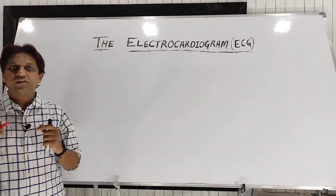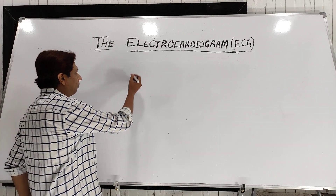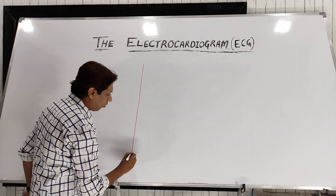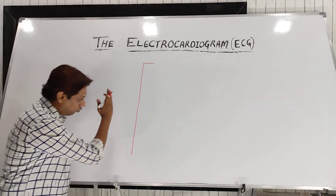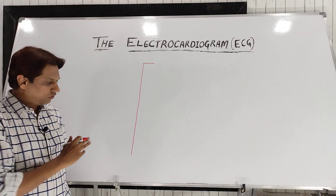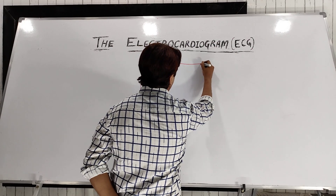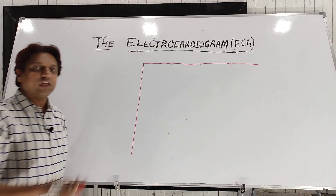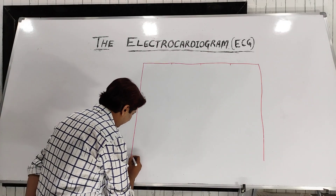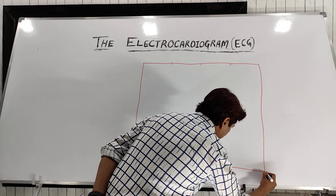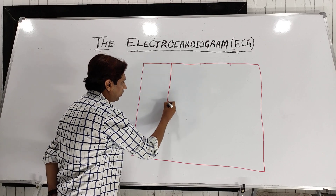Before that, we should be familiar with the ECG paper. Hope you have seen an ECG paper in an ECG machine. I will just draw how it looks. Basically, that ECG paper consists of big squares and small squares. What does that represent on the x-axis and y-axis — what do those big squares and small squares represent — we will discuss. Generally, on the x-axis it represents time duration, and on the y-axis it represents amplitude or current in millivolts.